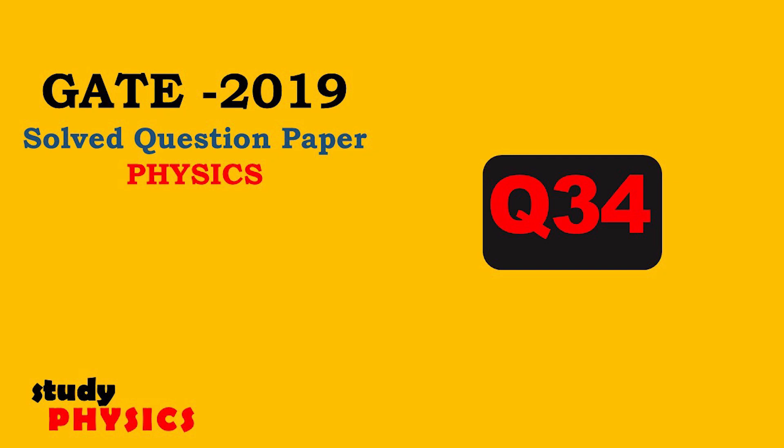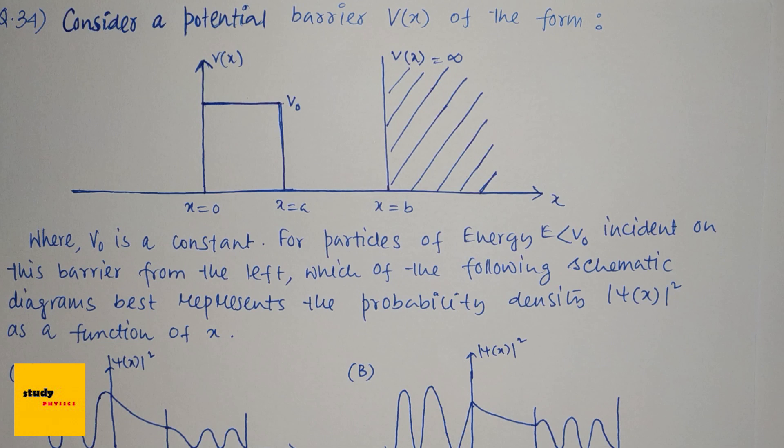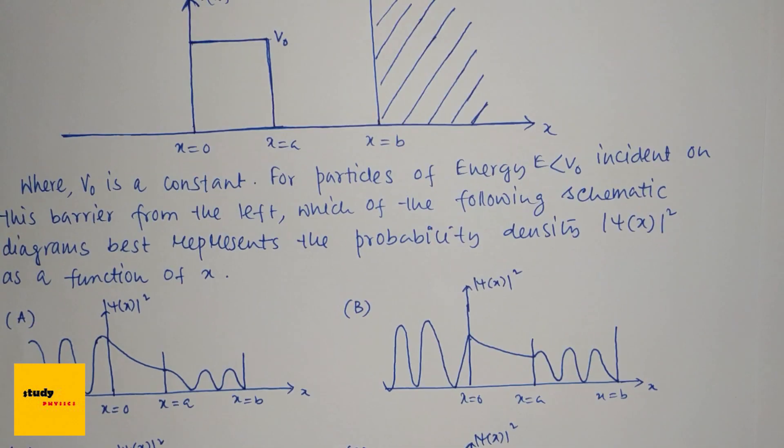Hi everyone, welcome to Study Physics. Here's question number 34: Consider a potential barrier V(x) of the form shown, where V₀ is a constant. For particles of energy E less than V₀ incident on this barrier from the left, which of the following schematic diagrams best represents the probability density |ψ(x)|² as a function of x? And these are the four options.